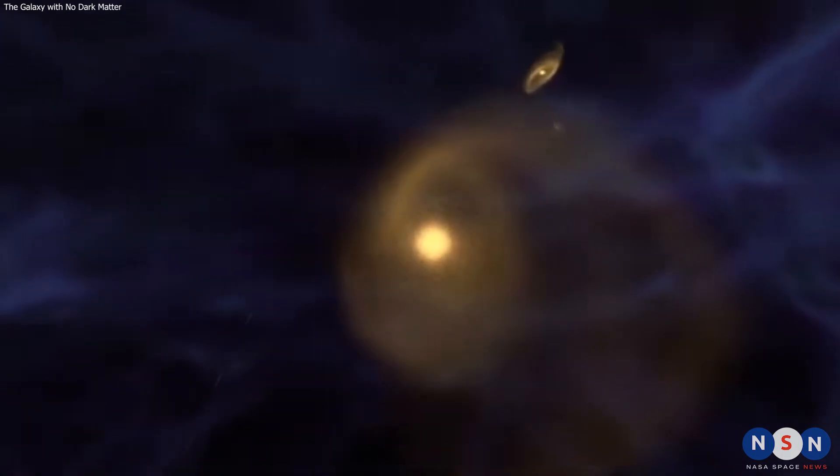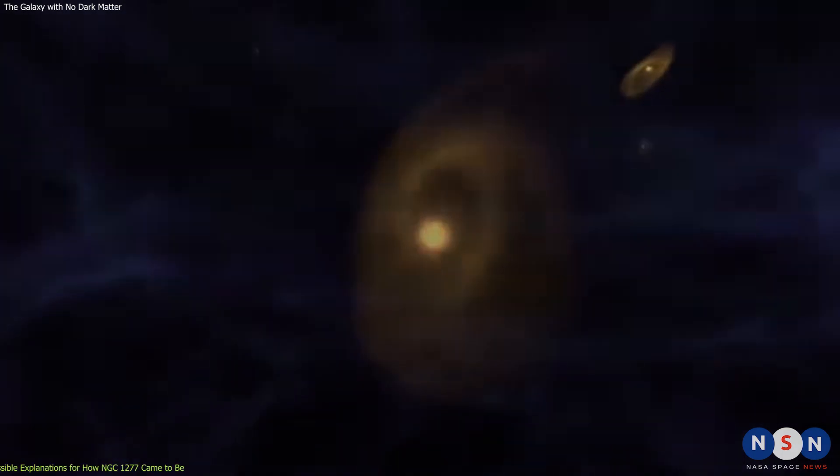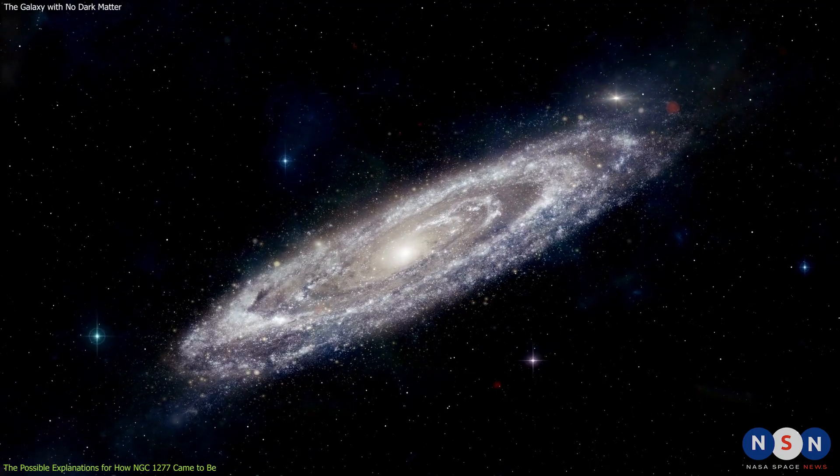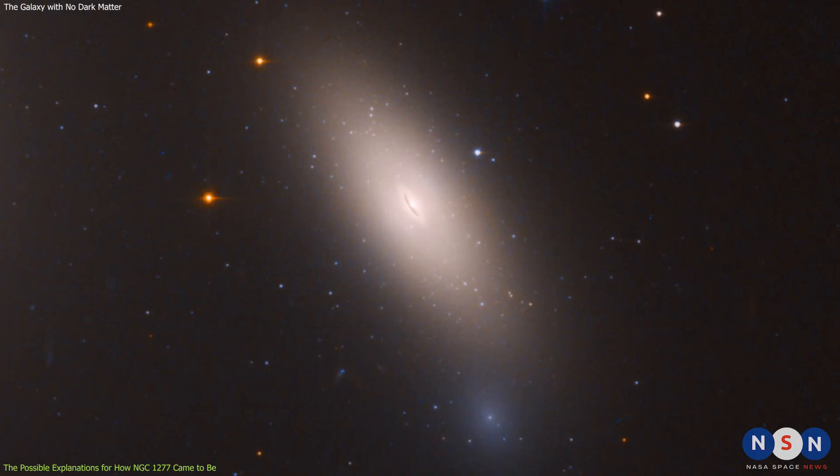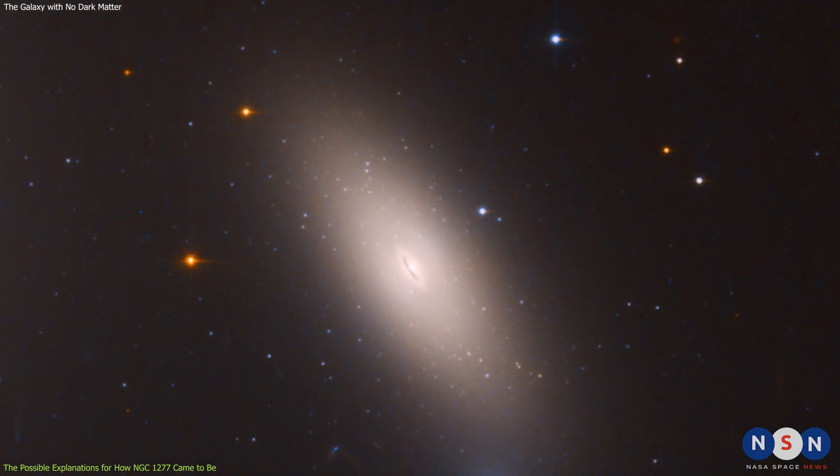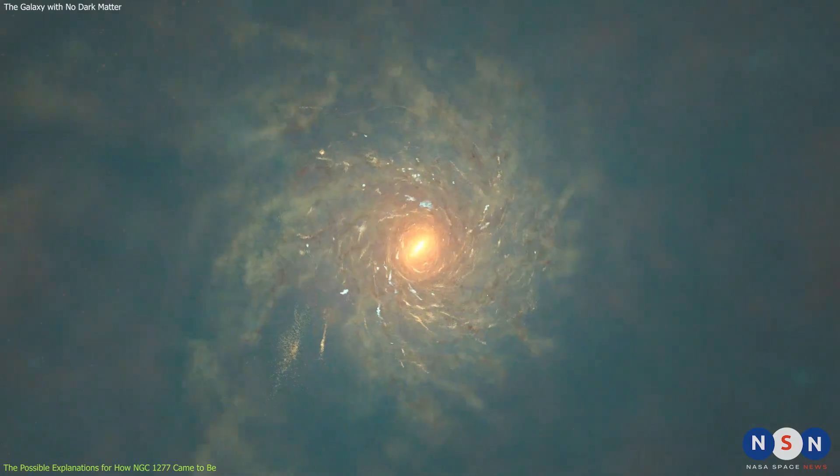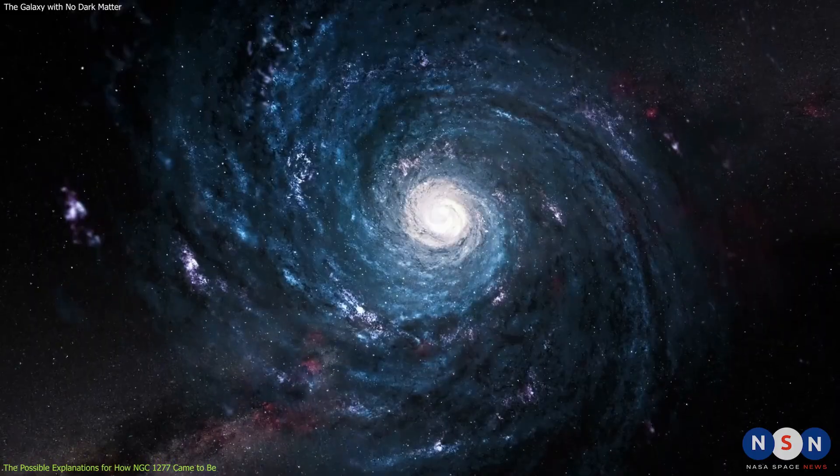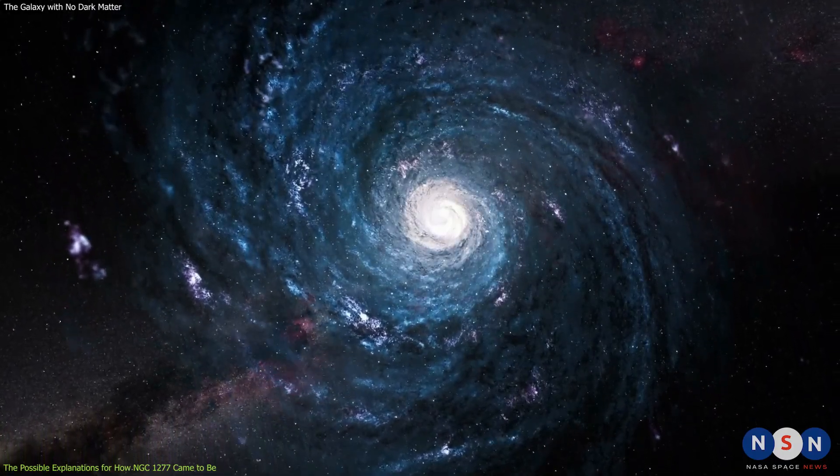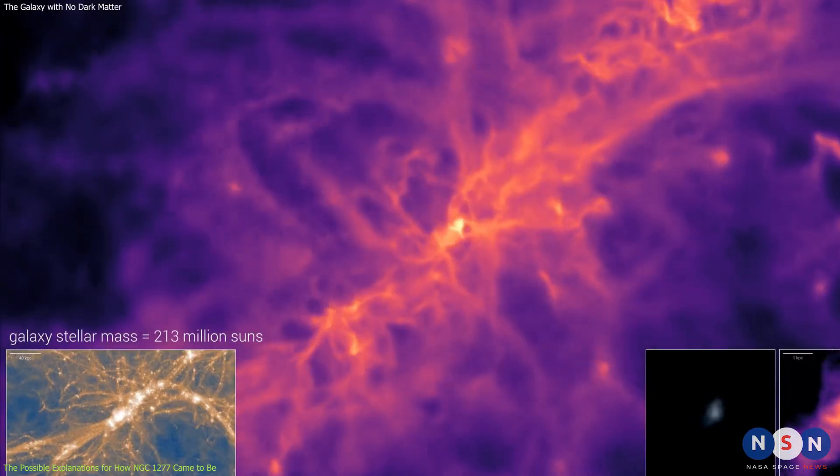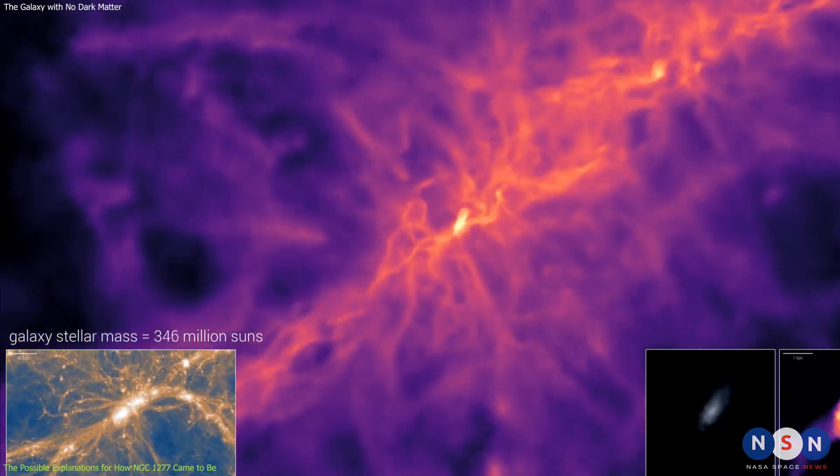So how can we explain this puzzling discovery? How can a galaxy exist without dark matter? Well, there are two possible scenarios that the team suggested in their paper. One is that NGC 1277 was stripped of its dark matter by the gravitational interaction with the surrounding medium within the Perseus cluster. The other is that this galaxy never had much dark matter to begin with, because it formed by the merging of protogalactic fragments that expelled the dark matter during the process.